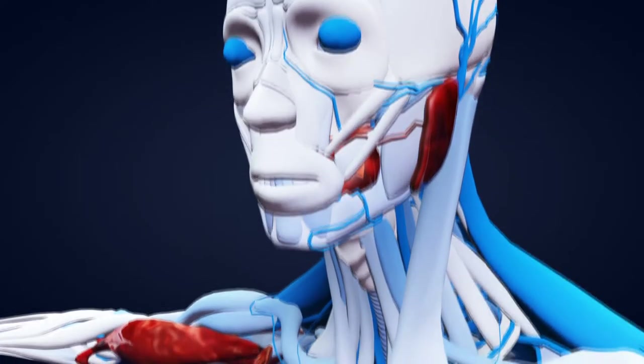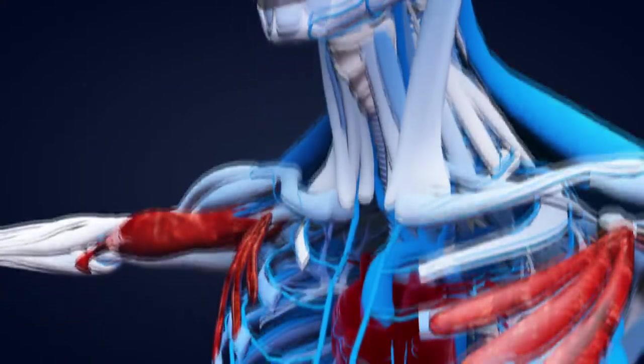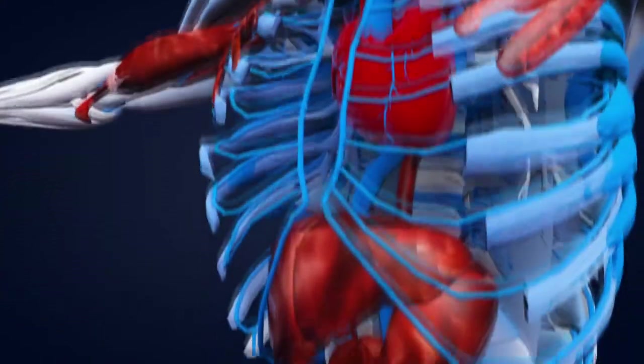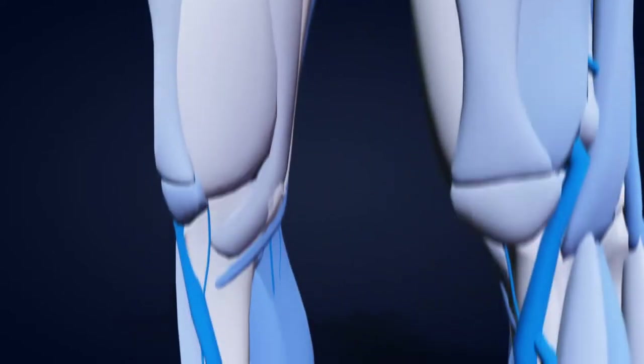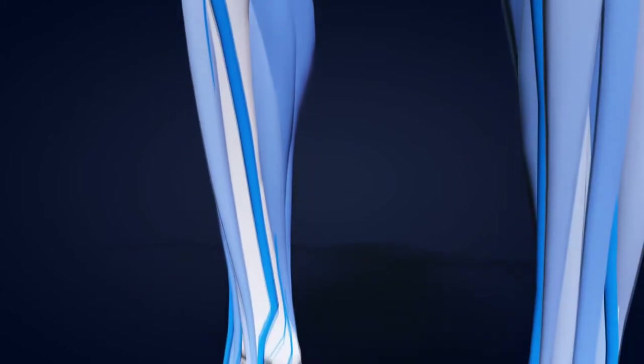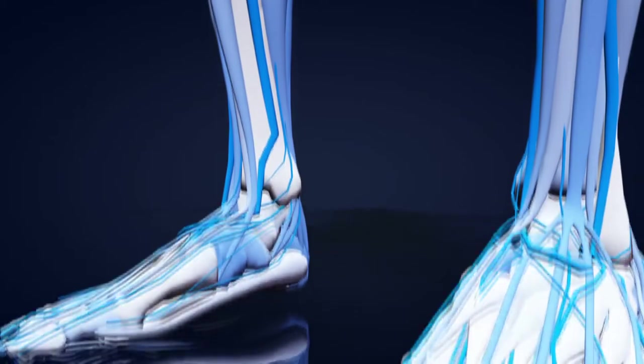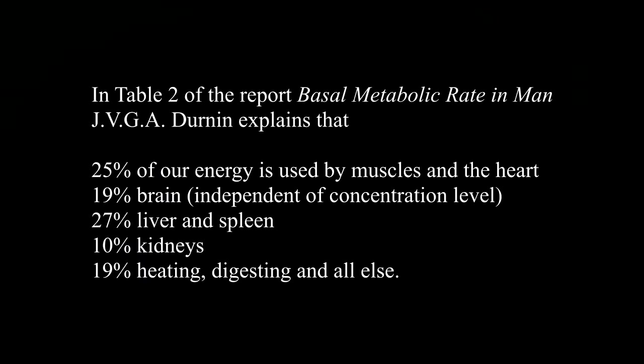While a person is motionless, the chemical operation of our livers, kidneys, and brains require energy at a rate of about 100 watts or 100 joules per second. A small portion of this involves the mechanical work done to move air and fluids through hearts, lungs, and arteries. We have seen that chemical energies are much greater than mechanical energies of motion. Dernan explains that 25% of our energy is used by muscles in the heart, 19% by the brain whether we're thinking or not, 27% is the chemical processes of the liver and spleen, 10% is the chemistry of the kidneys, and 19% is heating and digesting and everything else.